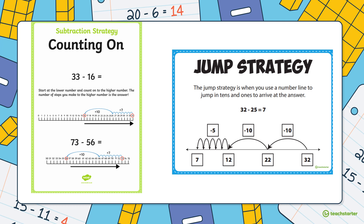We can also use counting on for subtraction. We start at the lower number in our mathematical problem. For example, 33 minus 16 — we can actually count forwards from 16 to work out the missing number. Start at the lower number and count on to the higher number; the number of steps you make is your answer. It's like an inverse operation. We can do this with larger numbers too, like 73 minus 56 — start at 56 and count how many steps to 73.